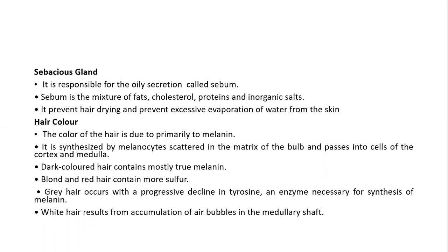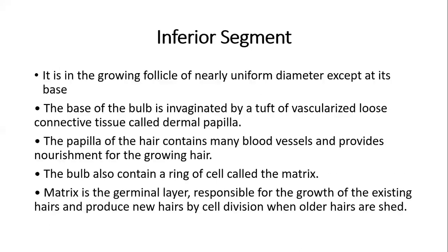The sebaceous gland is responsible for the oily secretion called sebum, which consists of fats, cholesterol, proteins, and inorganic salts. It prevents hair drying and excessive evaporation of water from the skin. Hair color is mainly due to the content of melanin, synthesized by melanocytes in the matrix of the bulb and passed into cells of the cortex and medulla. Dark hair contains more melanin, while blonde and red hair contains more sulfur. Gray hair occurs with a progressive decline in tyrosine — an enzyme necessary for melanin synthesis — and white hair results from the accumulation of air bubbles in the medullary shaft.